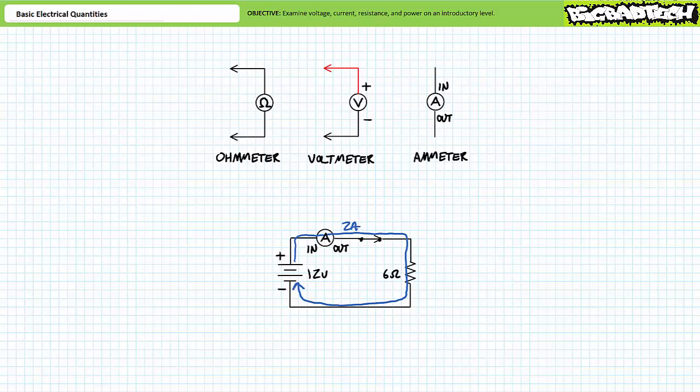Voltage is a differential across two points. Current is flow through a single point. Resistance is opposition to current flow. Delivery of power necessitates both voltage and current.